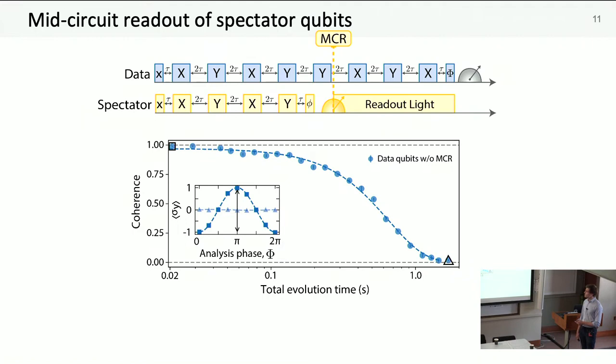We're then going to add in this mid-circuit measurement and see what happens. We synchronously decouple the spectator qubits. Then halfway through the sequence, we stop that decoupling to perform measurements on the spectator qubits while still trying to preserve data qubit coherence. For fun, we just leave the readout light on for the entire remainder of the duration to see what effect that's actually having on the data coherence.